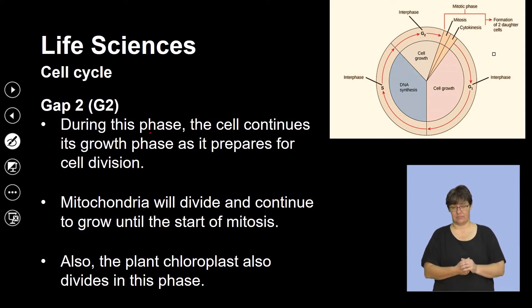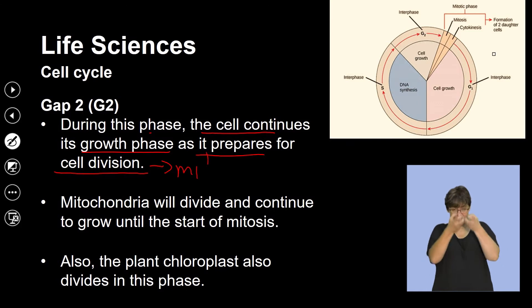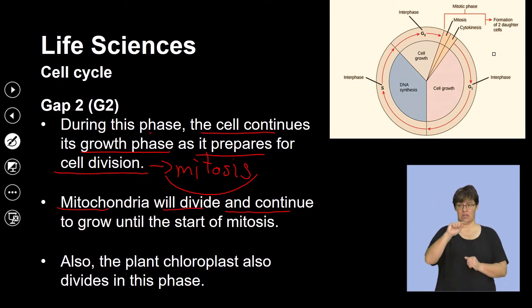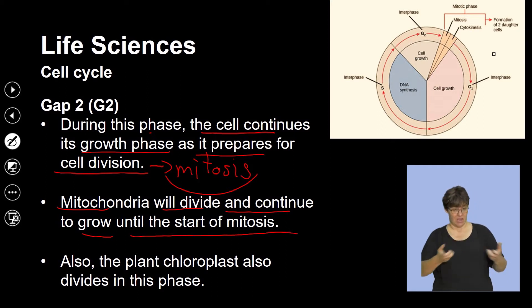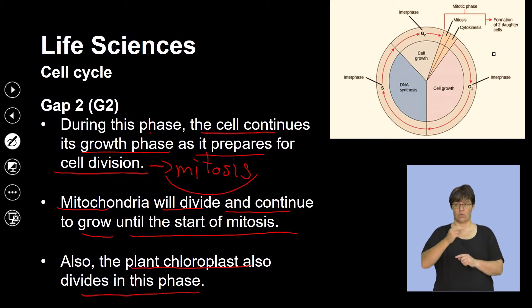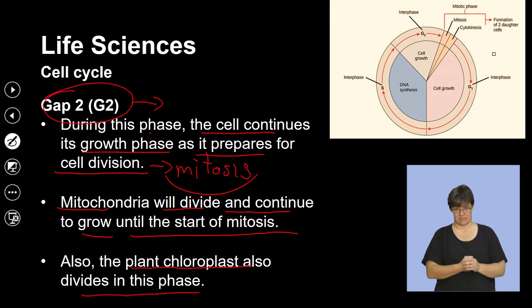During the G2 phase, the cell continues to grow and prepares for cell division, which we refer to as mitosis. The mitochondria will divide and continue to grow until the start of mitosis, so more mitochondria are being produced and they further develop. The plant chloroplast also divides in this phase, so there is organelle growth and development throughout the G2 phase.